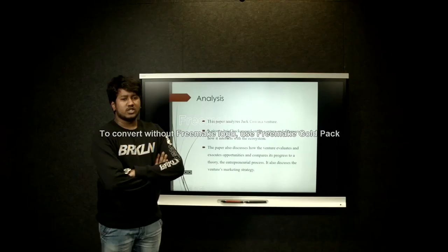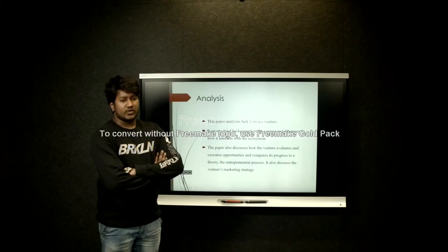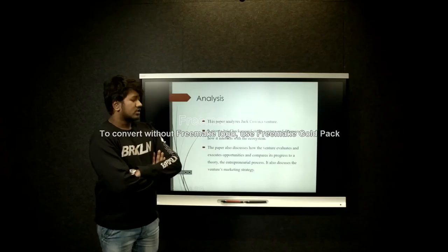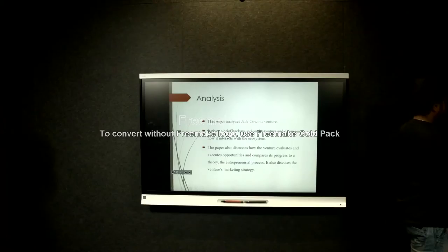In this paper we analyze Jack Covent's venture. It gives a brief background on the venture and discusses how it interacts with the ecosystem. The paper also discusses how the venture evaluates and executes opportunities, how it creates opportunities, and compares progress of the theory. The entrepreneurial process also discusses the venture's marketing strategy. The remaining slides will be conducted by my friend Kandab Shukla. Thank you.